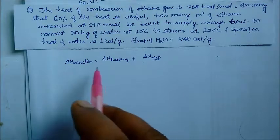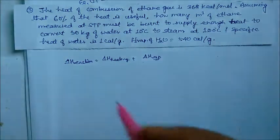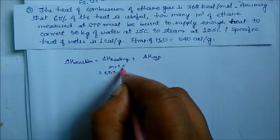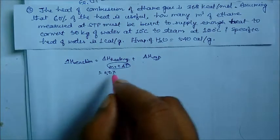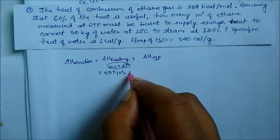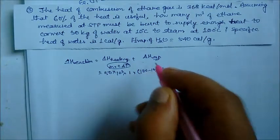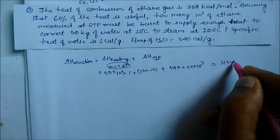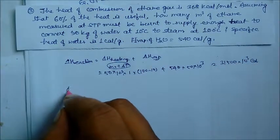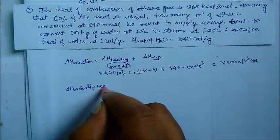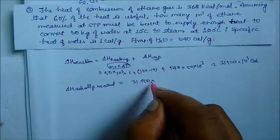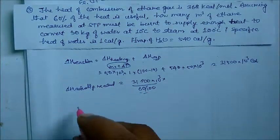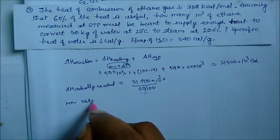The temperature range is 10 to 100 degree centigrade for heating, and then vaporization converts water to steam. Using Q equals MC delta T: mass is 50 into 10³, specific heat is 1, delta T is 90. Heat of vaporization is 540 multiplied by 50 into 10³. Total heat is 31,500 into 10³ calorie. Since only 60% of heat is useful, the actual heat needed from combustion is 31500 into 10³ divided by 0.60.